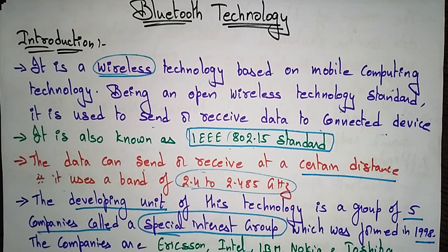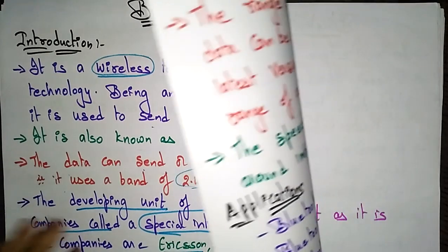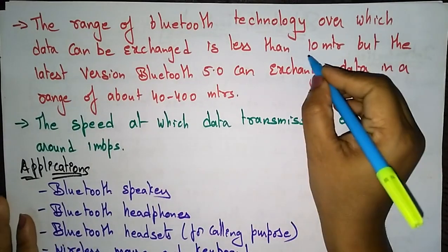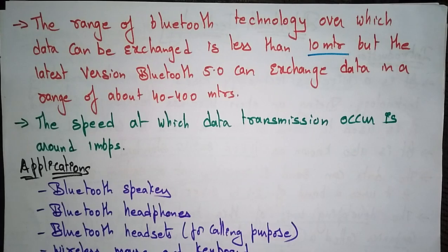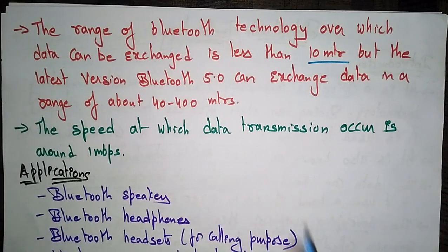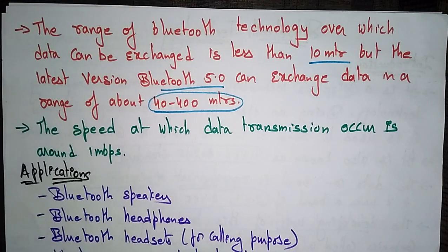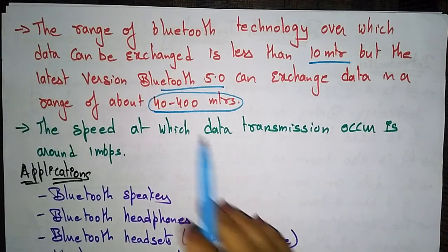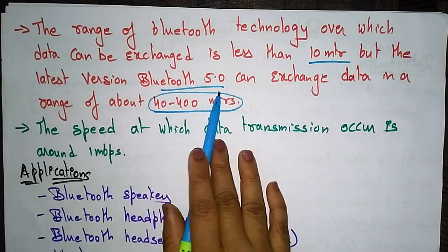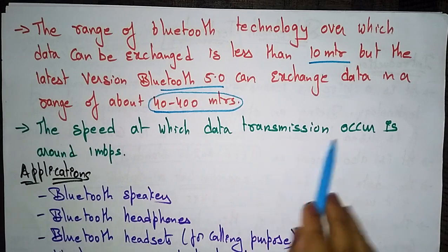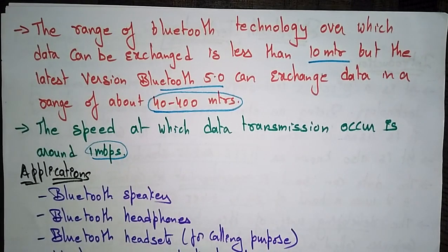The range of Bluetooth over which data can be exchanged is less than 10 meters. However, the latest version, Bluetooth 5.0, can exchange data in the range of 40 to 400 meters. The speed at which data transmission occurs is around 1 megabit per second.